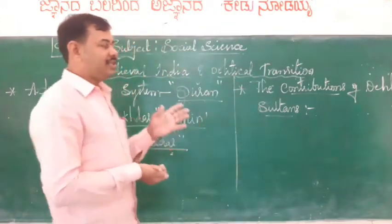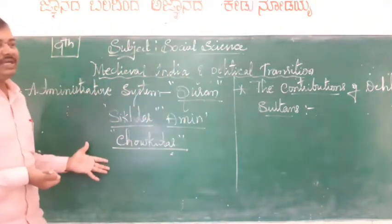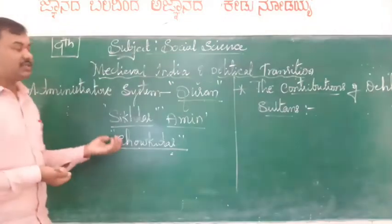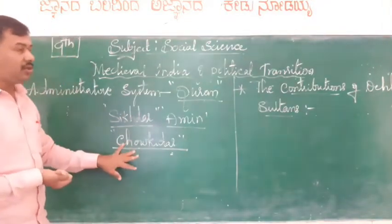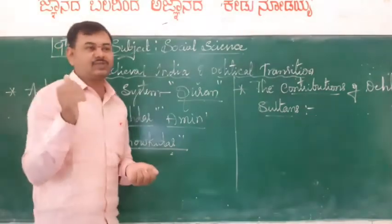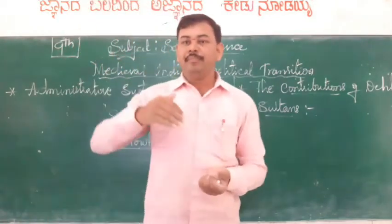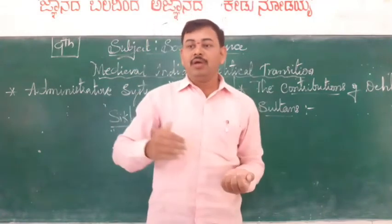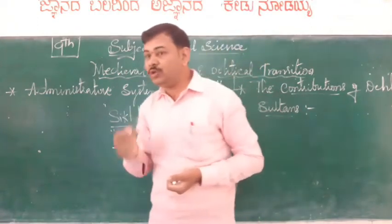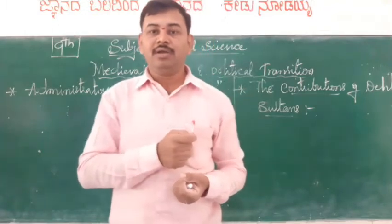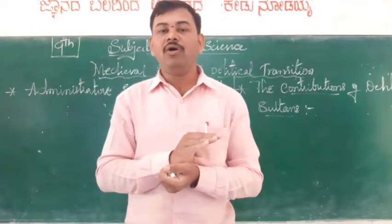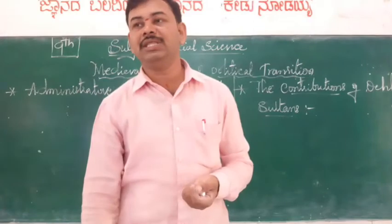During the time of the Sultans, these officials — the Shikdar, Amin, and Chowkidar — were appointed by the Sultan. Their main duties were to collect taxes from the people, maintain law and order in the kingdom, provide education to the public, and ensure cleanliness in their department. These were the main roles of all the officers appointed by the Sultan.